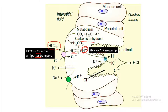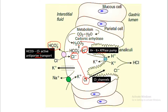Due to the release of H+ ions inside the lumen of the stomach, for every individual H+ ion released there is a release of HCO3− into the blood, which is responsible for postprandial alkaline tide. The Cl− ion that enters then goes inside the lumen via Cl− channels.